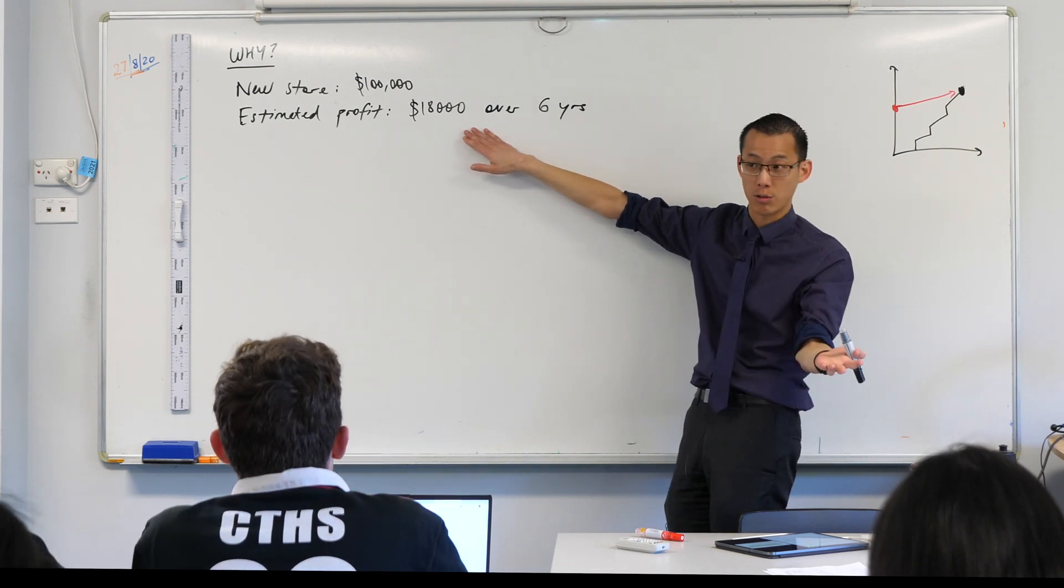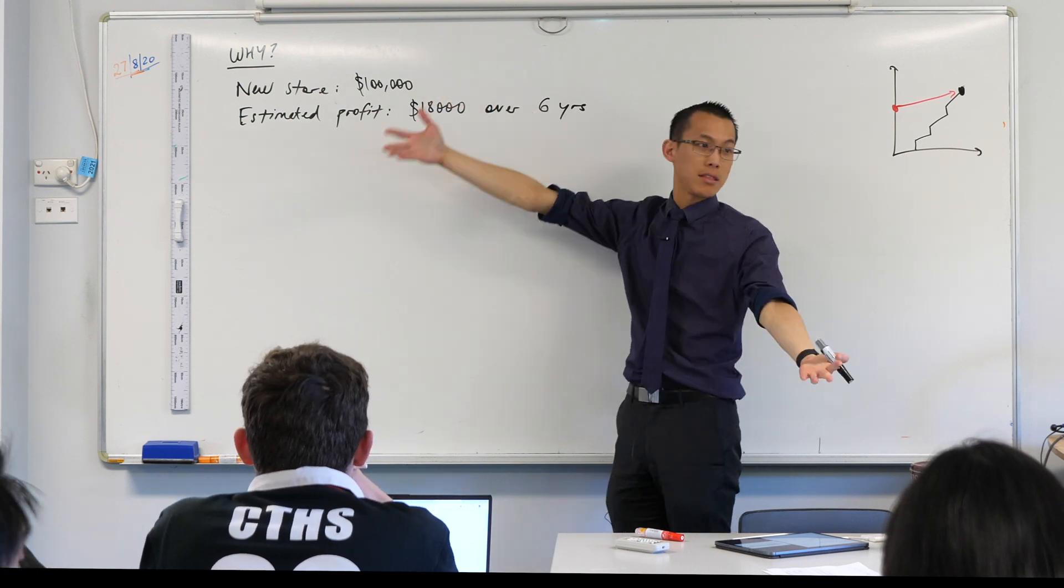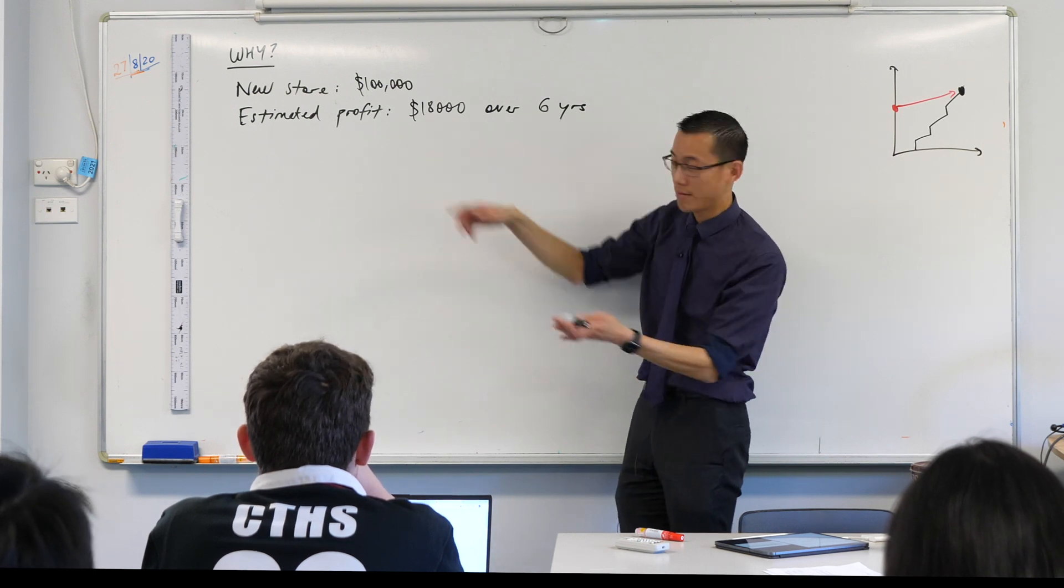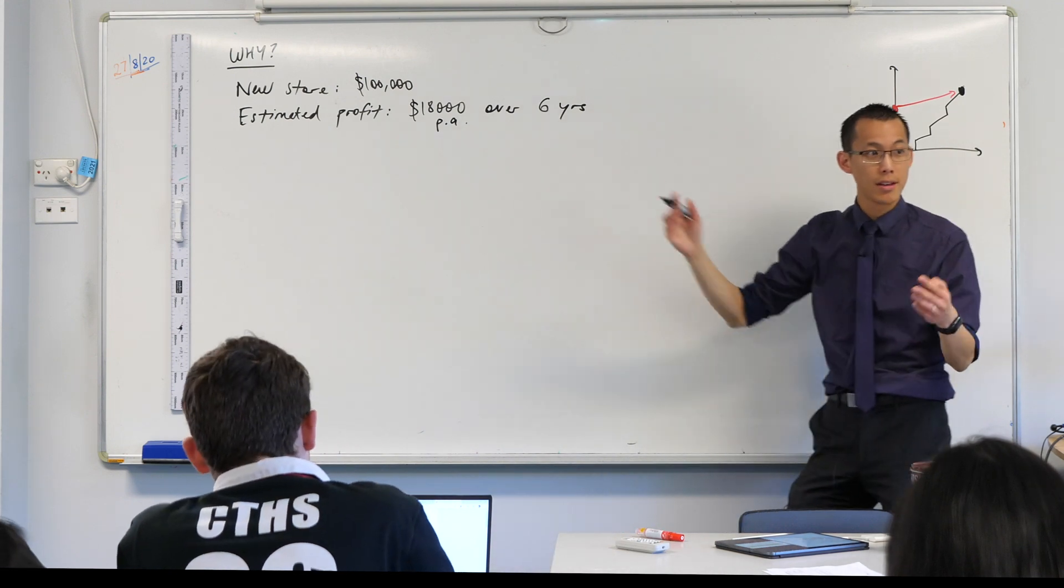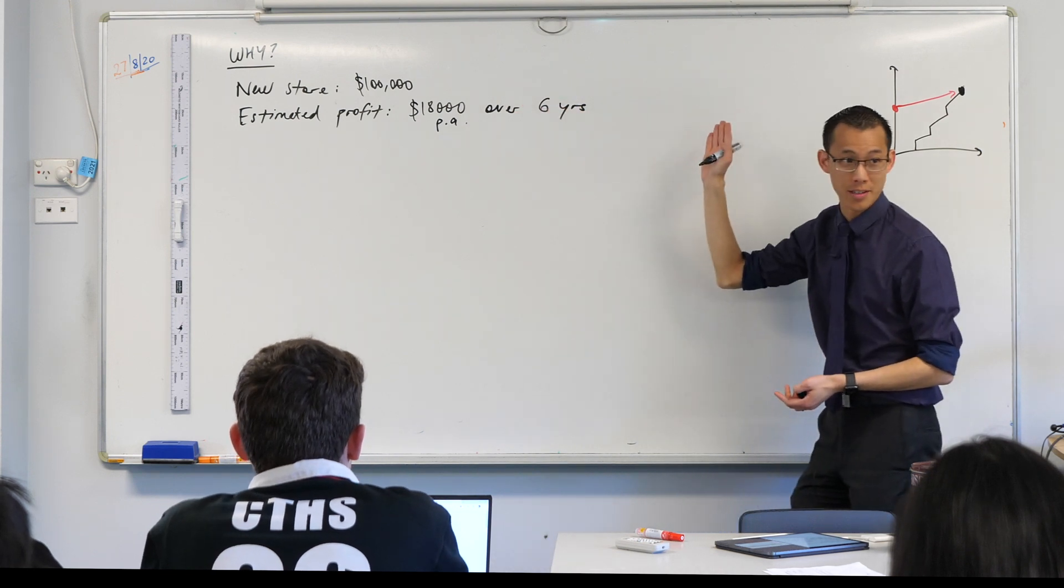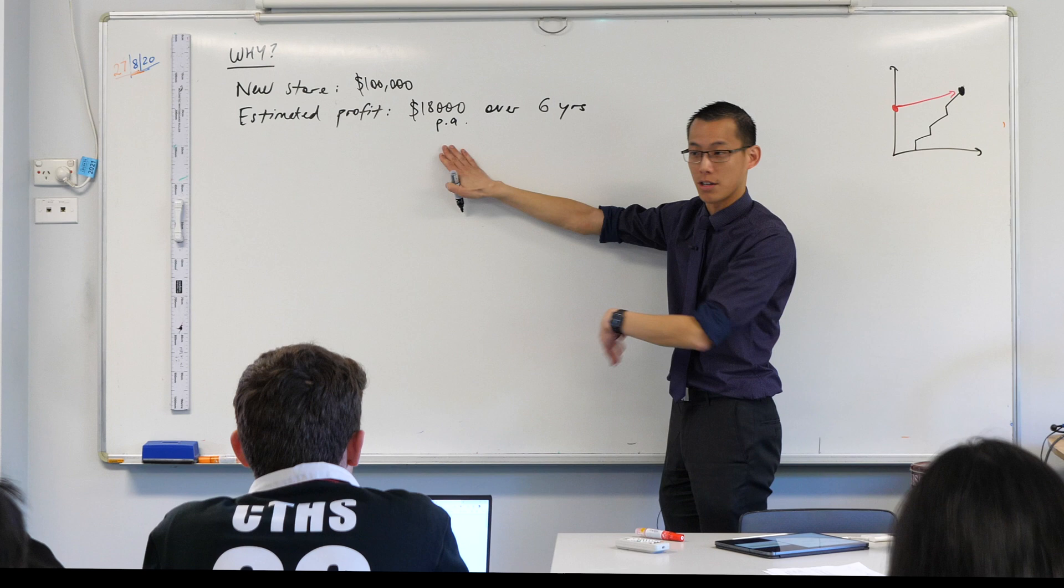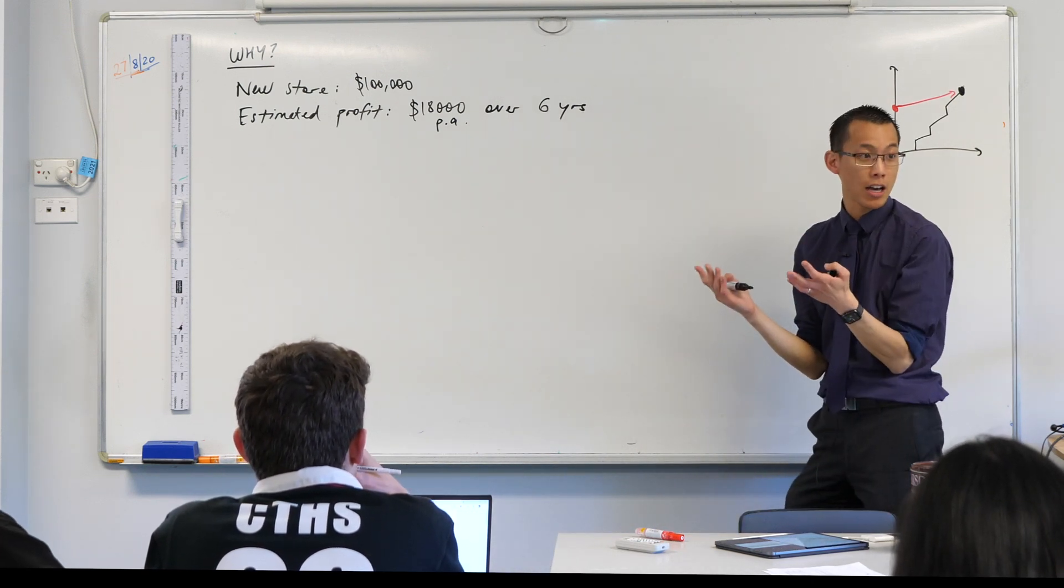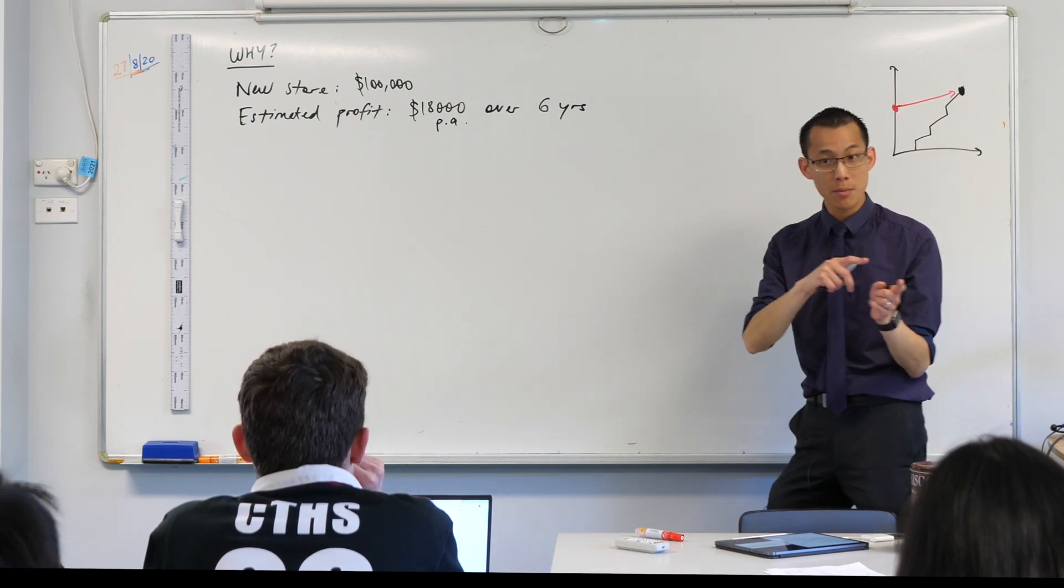So the loan is going to be how much I have to borrow to start this store, right? So eighteen thousand is how much I'm going to profit, and I should say that that's actually every year. I should have said eighteen thousand per annum over the course of six years. So year one I'm going to make this much, and then year two I'm also going to make this much, and so on and so on. So I'm trying to work out, am I going to come out ahead? Is this a worthwhile thing to do to start this business?